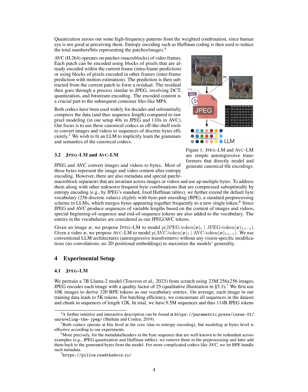For videos, AVC operates on macro blocks of frames, employing intra-frame and inter-frame predictions to encode patches, followed by a similar DCT, quantization, and bitstream encoding process. Once the data is encoded into JPEG or AVC tokens, the LLM is trained to model the probability of these tokens autoregressively, allowing it to generate new sequences of tokens that can be decoded back into images or videos. The decoding process involves reversing the encoding steps to reconstruct the original visual content, enabling generation of high-quality images and videos without traditional vector quantization complications.